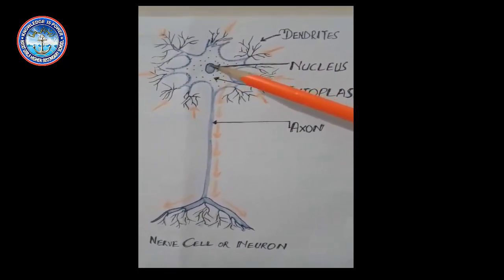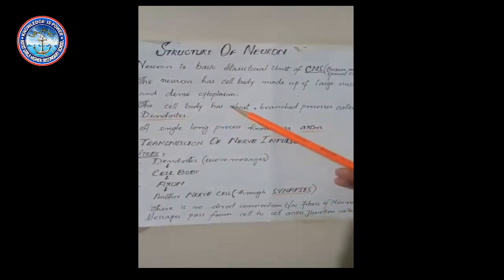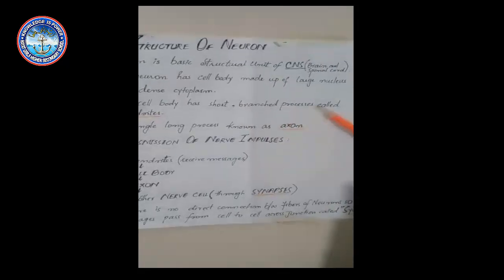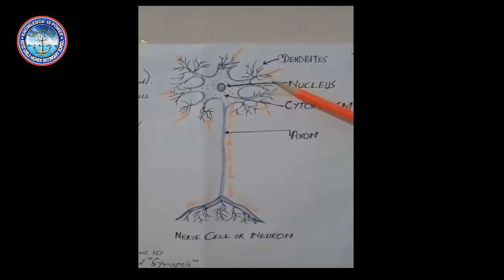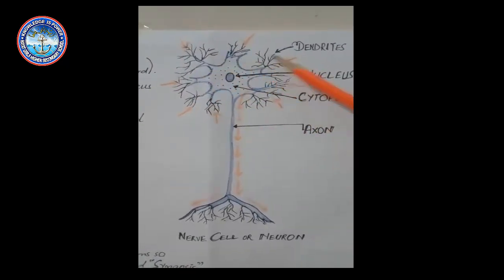Second, the cell body has short branch processes called dendrites. As the picture shows, it has short minute, or we can say fine branches. These branches are considered as the dendrites.